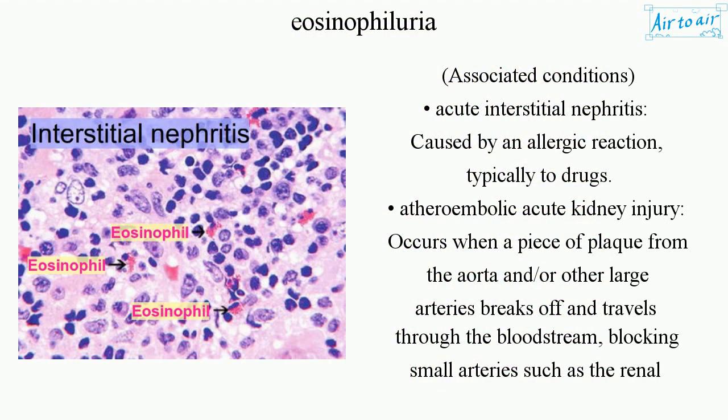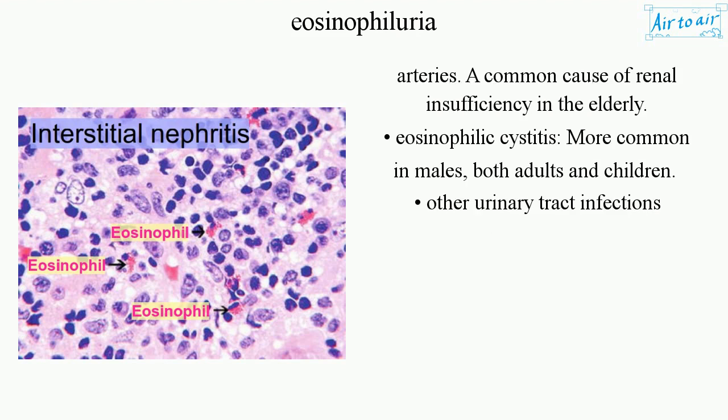Associated conditions include: acute interstitial nephritis, caused by an allergic reaction typically to drugs; atherembolic acute kidney injury, which occurs when a piece of plaque from the aorta or other large arteries breaks off and travels through the bloodstream, blocking small arteries such as the renal arteries — a common cause of renal insufficiency in the elderly; eosinophilic cystitis, more common in males, both adults and children; and other urinary tract infections.